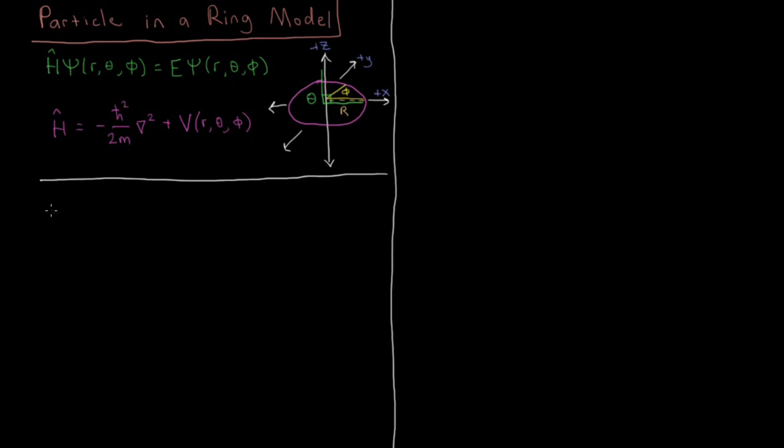So our potential energy function, let's define that, our V of r, theta, and phi. This is going to have two types of values. It's going to be zero if our radius r equals big R. So this orange dotted line here on this purple circle here, those are all the values, those all have the value of r equals capital R there.